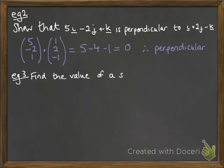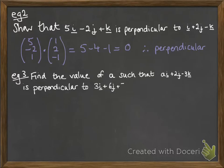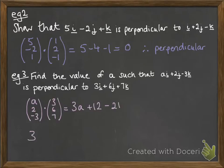Next example: we've got an unknown A in this vector. We want to find the value of A so that it's perpendicular to this vector here. Do the scalar product and make that equal to 0 to make it perpendicular. To make that work, A has to be 3.